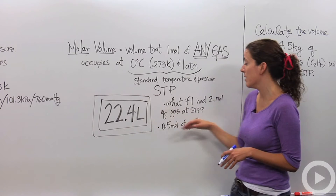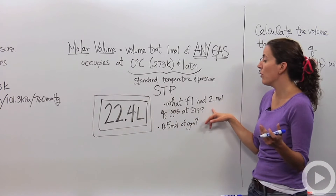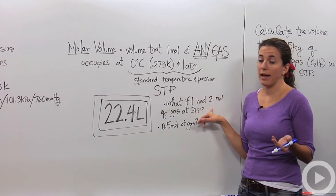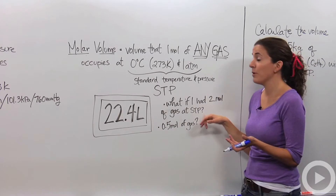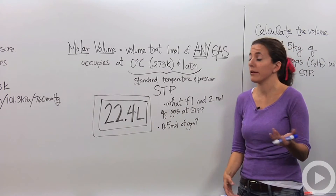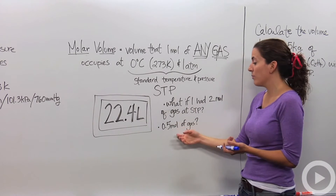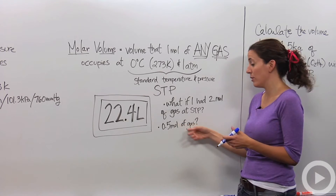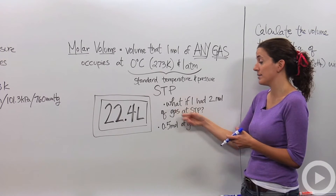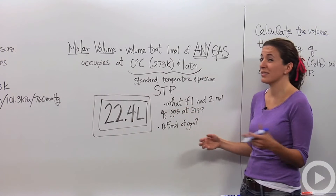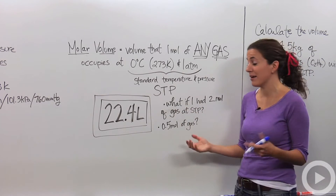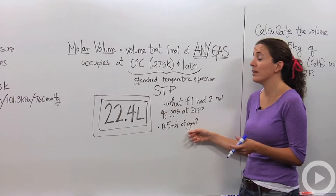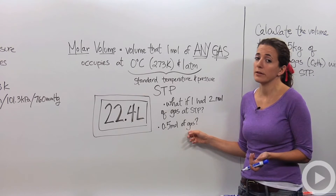It doesn't matter what the gas is. What if I had two moles of that particular gas? Well, it would be 44.8 liters. What if I had half a mole of that particular gas? Notice I didn't tell you what gas it was, because it doesn't matter — it would be 11.2 liters.